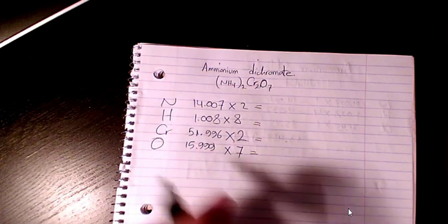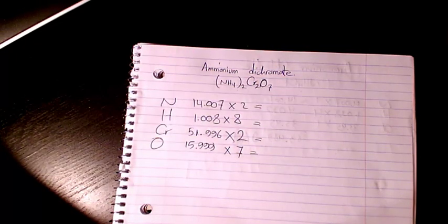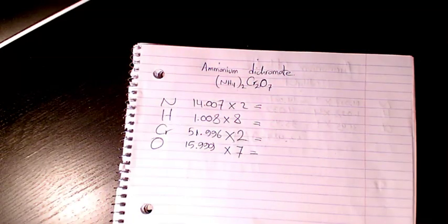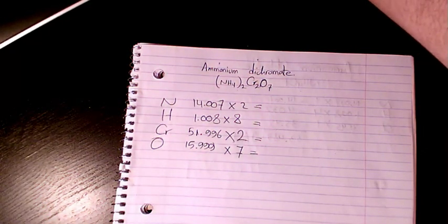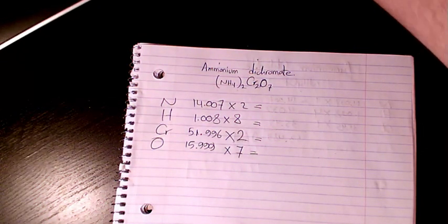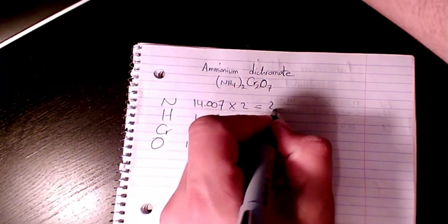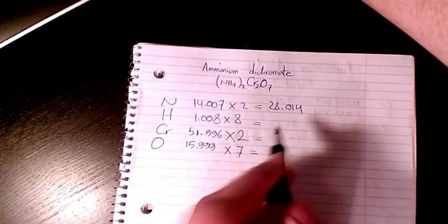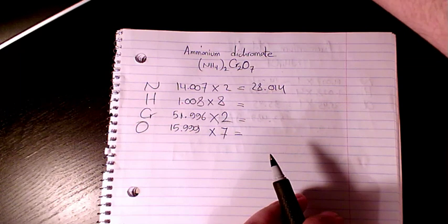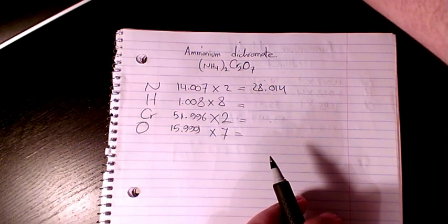Then I will find the total. We have 14.007 times two, that's 28.014. Eight times 1.008